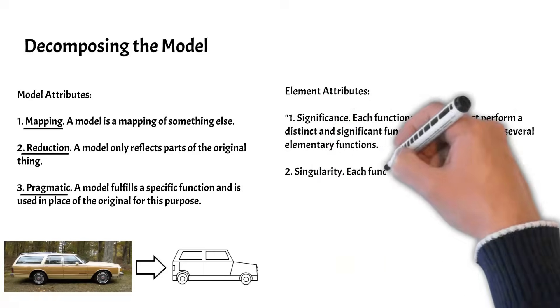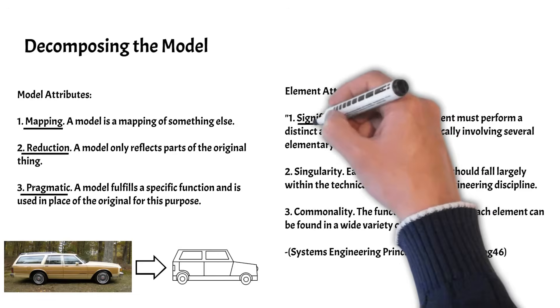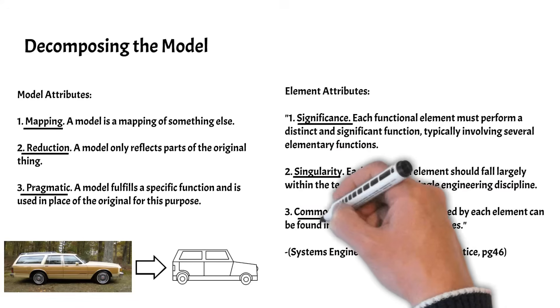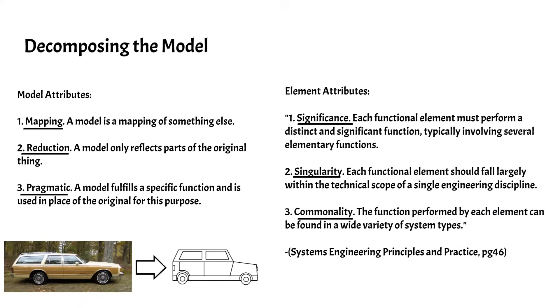Elements also have three distinct attributes. The three criteria include significance, singularity, and commonality. These attributes ensure elements are consistent, representative, neither trivially simple nor inordinately complex, and have wide application.